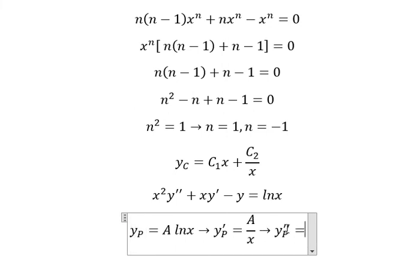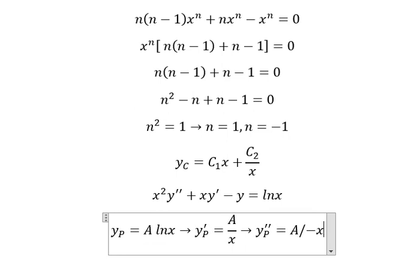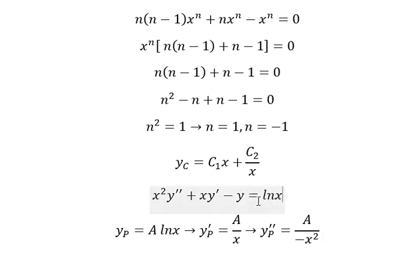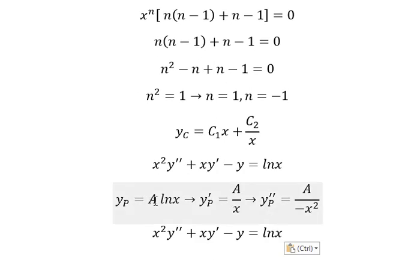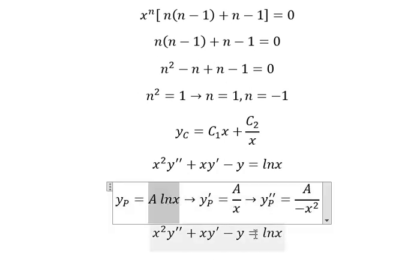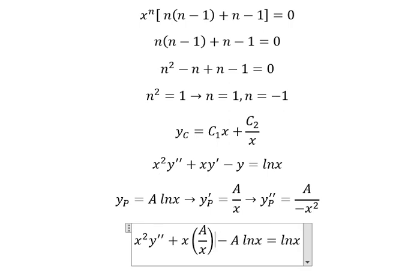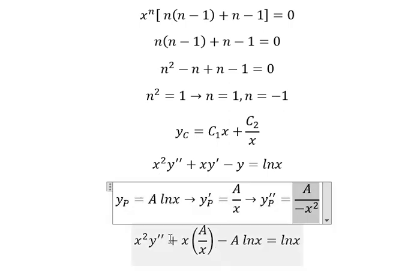The first derivative of 1 over x gives us negative 1 over x squared. Now I will substitute y double-prime, y-prime, and y back into the original differential equation.